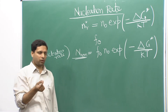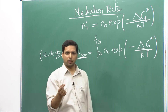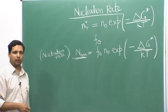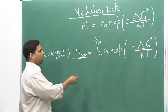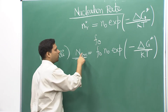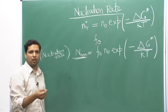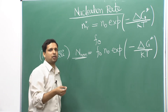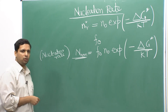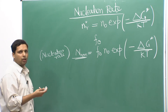As soon as the size of a nucleus becomes larger than r*, it will become stable and get transformed from liquid to solid. This frequency is the rate at which the critical nucleus becomes super-critical — above the critical size — and hence gets transformed into solid.